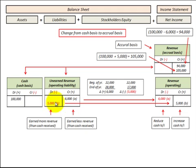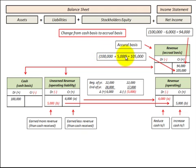Now if we look at the case where unearned revenue decreased by $5,000 during the year, that means our realized revenue would have increased by $5,000. So we take our cash basis of $100,000 and add the $5,000 increase in revenue, which gives us $105,000 revenue on the accrual basis.